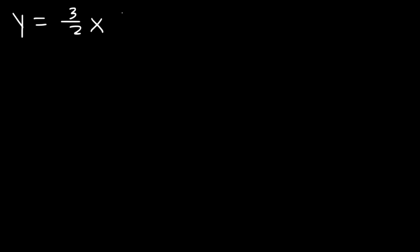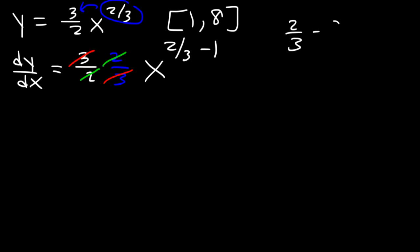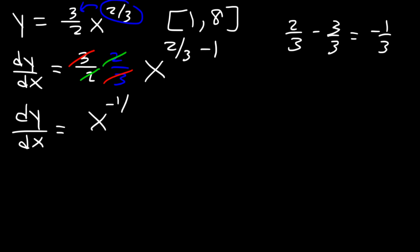Now let's move on to the next example. Let's say that y is equal to 3 over 2 times x raised to the 2 over 3, and the interval is from 1 to 8. Find the length of the arc of this curve from 1 to 8. Since y is the same as f of x, we can find y prime, or f prime, which is the same as dy dx. Using the power rule: 3 over 2 times 2 over 3 gives x to the 2 thirds minus 1. 2 thirds minus 1 is negative 1 over 3. So dy dx is x raised to the negative 1 third.